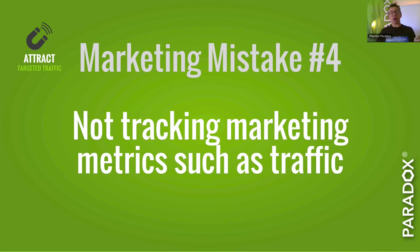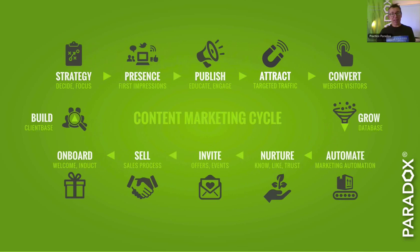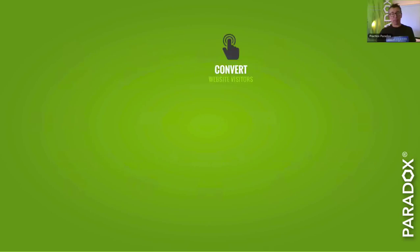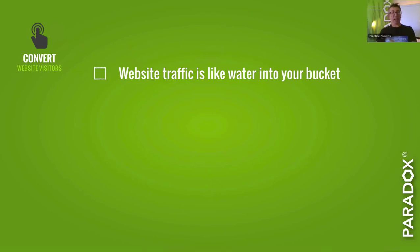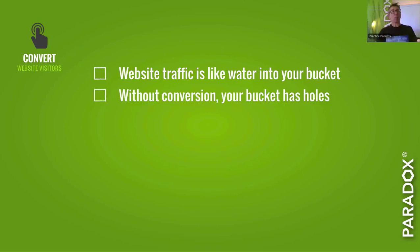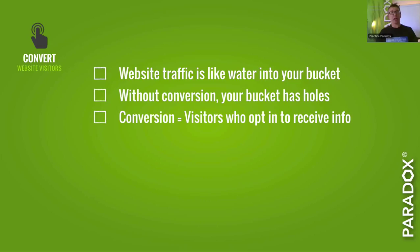Marketing mistake number four: not tracking marketing metrics, such as traffic. The next really important step is convert. When we build a marketing metrics dashboard, one metric we display is conversion rate. In Google Analytics you can set up conversion goals — what you want people to do when they come to your site. Website traffic is like water flowing into a bucket, but without a converting website your bucket has holes. When a website is converting, visitors are opting in — giving their permission to receive further information.